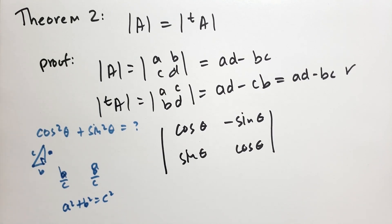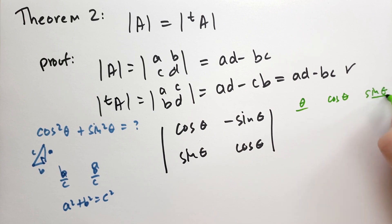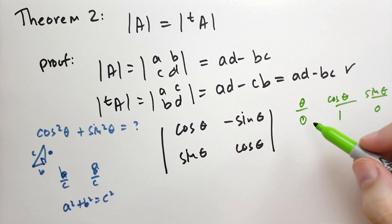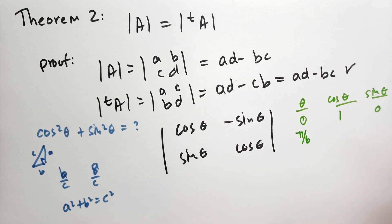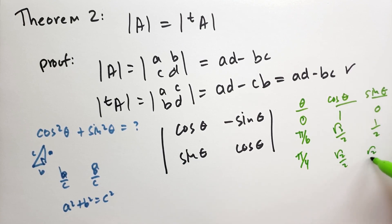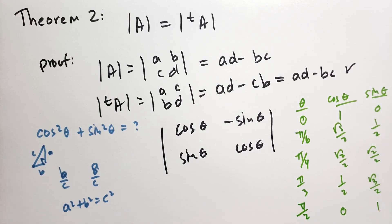Number 3 asks you to plug in different values of θ. Here's a quick reference table: for θ = 0, cos θ = 1, sin θ = 0; for θ = π/6, cos θ = √3/2, sin θ = 1/2; for θ = π/4, both are √2/2; for θ = π/3, cos θ = 1/2 and sin θ = √3/2; for θ = π/2, cos θ = 0 and sin θ = 1. That table should help you solve it quickly.